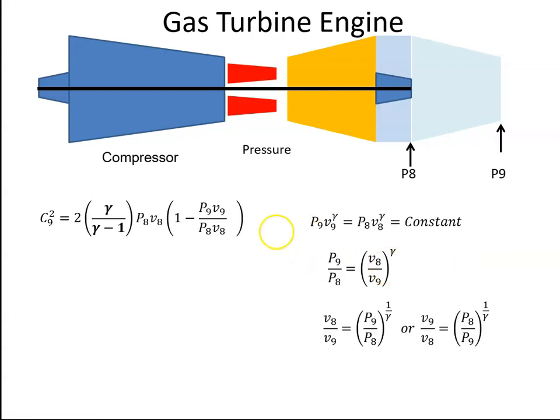We know that in an adiabatic process P by V to the power of gamma is a constant. So we can get an expression for V9 over V8 from this and we're going to put that back in, and then this equation becomes this equation here.